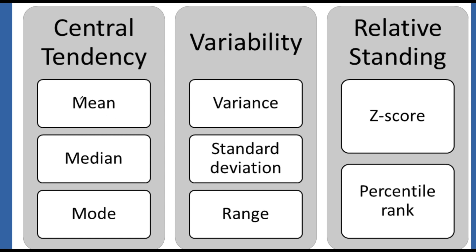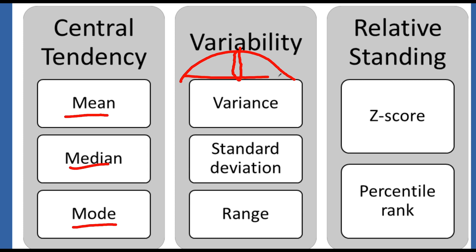Central tendency is looking at the middle part — the heart of the data. So when you have your distribution, central tendency is trying to capture what's happening in the middle: mean, median, and the most frequently found values — the mode. Variance or variability is measuring how spread out the data is — the left to right of the data. So variance, standard deviation, and range all work together for that.